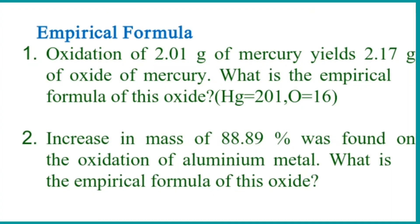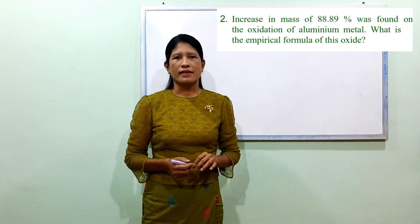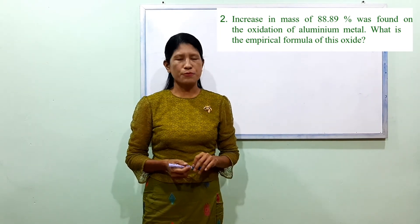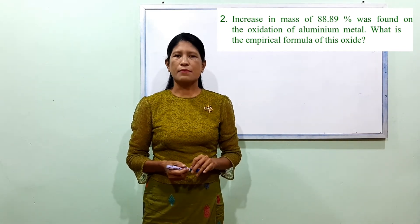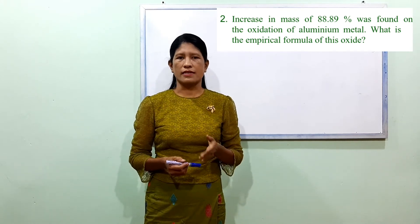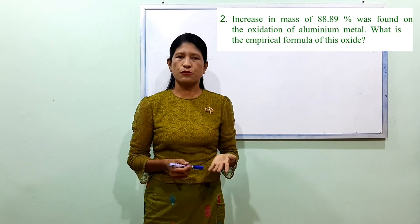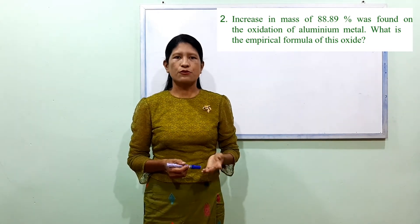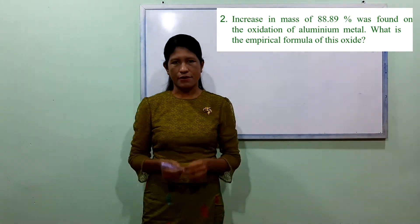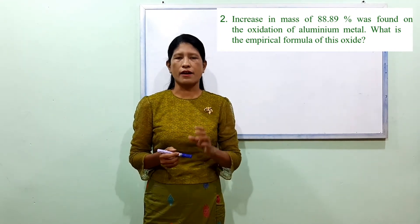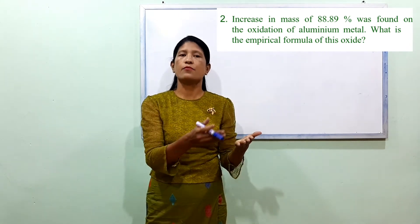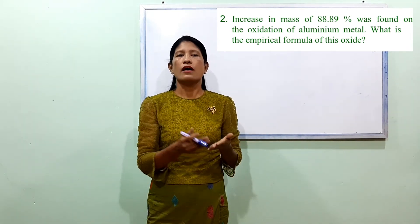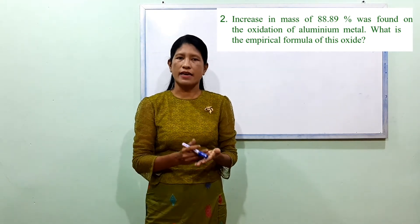Number 2: Increase in mass of 88.89% was found on the oxidation of aluminum metal. What is the empirical formula of this oxide? The 88.89% represents oxygen added during oxidation of aluminum to form aluminum oxide.